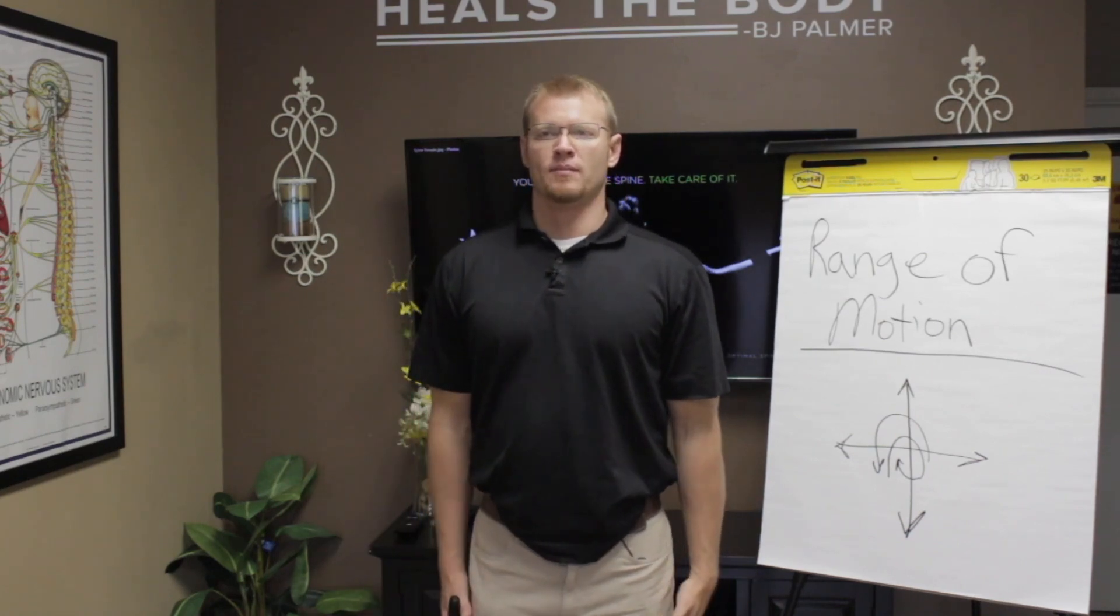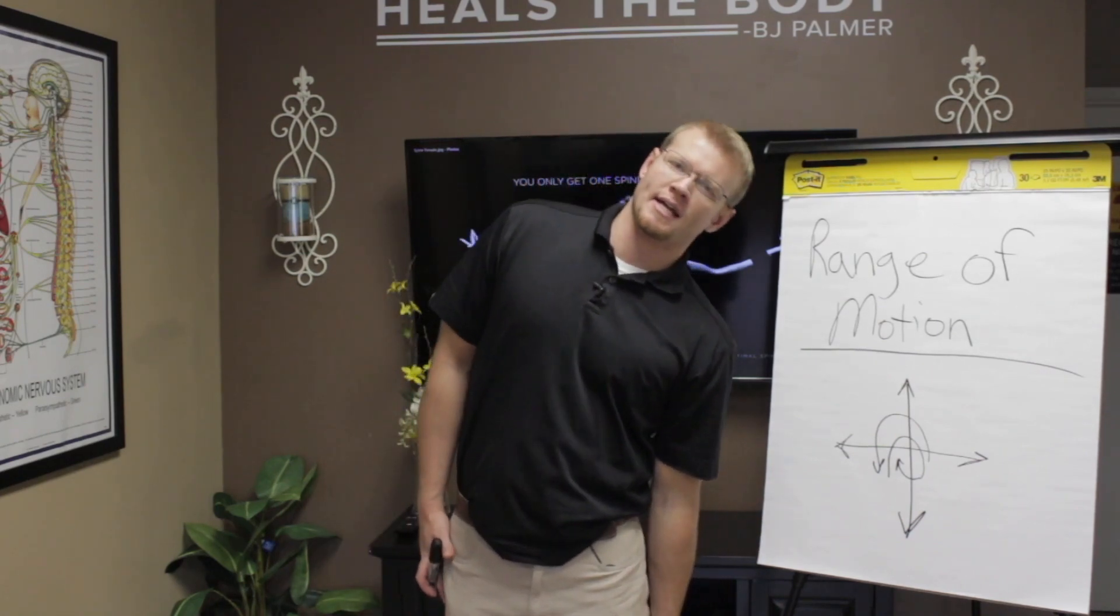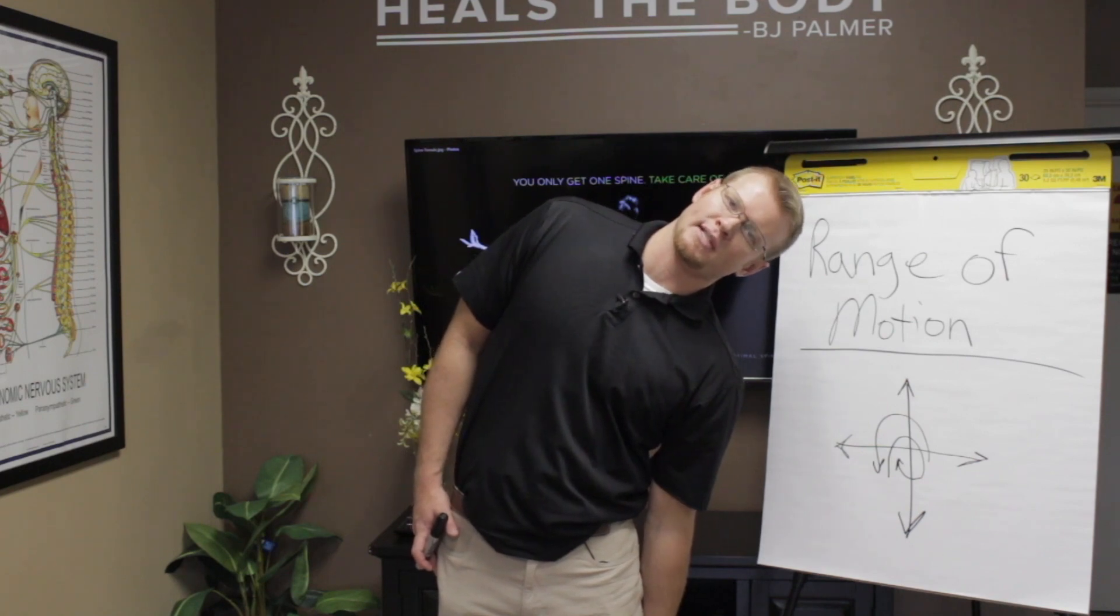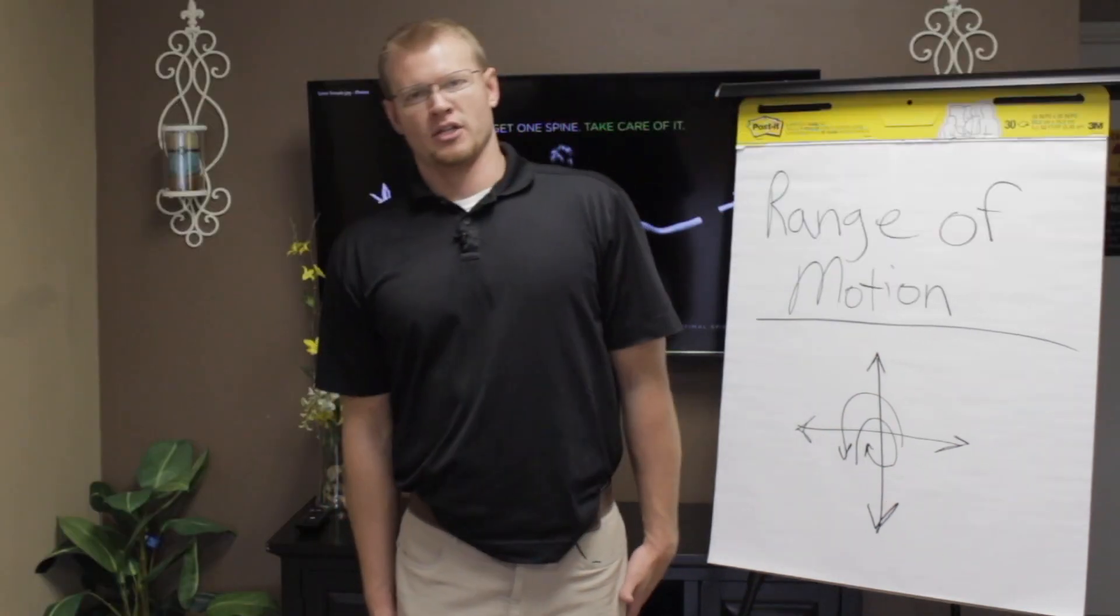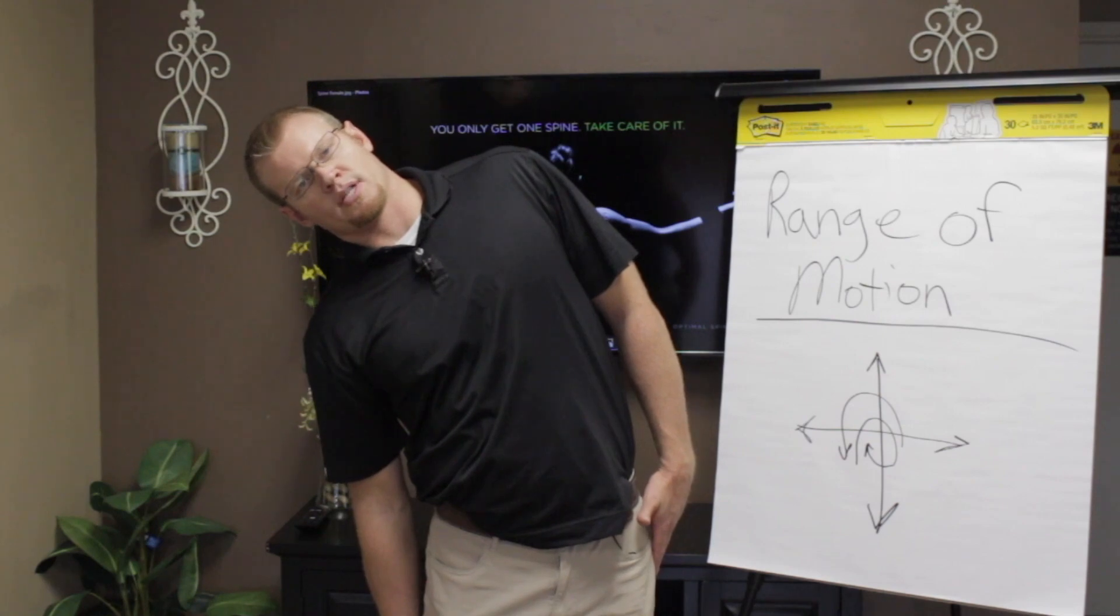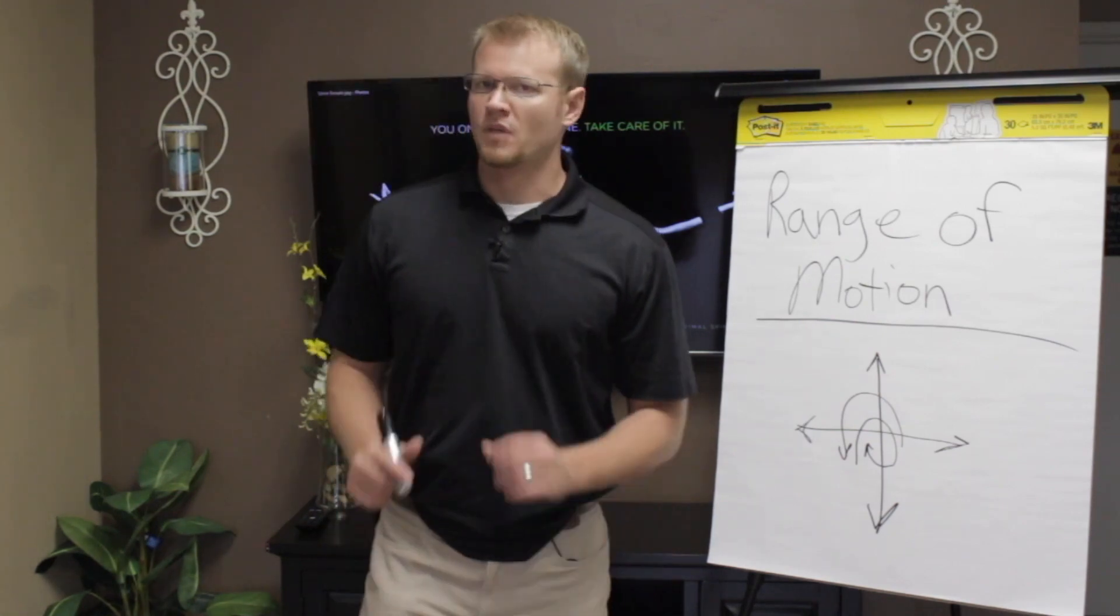And now you move to the second plane of motion, lateral bending. So we're going to slide our hand down our leg to the knee, hold it for 10 seconds to the left, and then slide your right hand down the knee and hold it to the right for 10 seconds to the right. Okay.